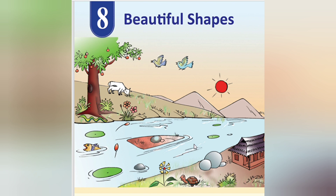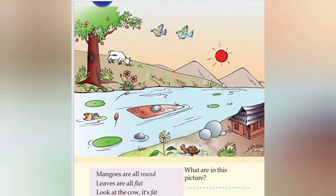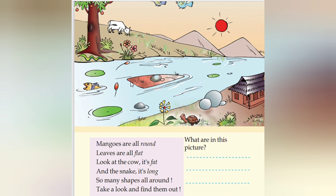Now we are going to see the sun rising. Then two birds are flying away. A tree is also there. Flowers, river, fish, lotus, tortoise, horse, house — everything is there. Cow is grazing. Mangoes are all around.